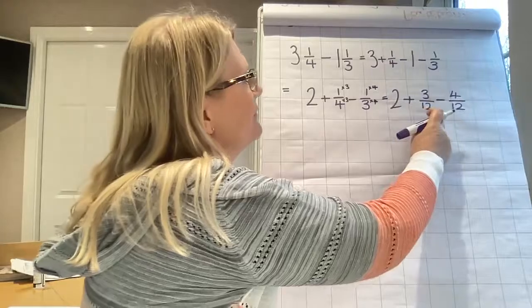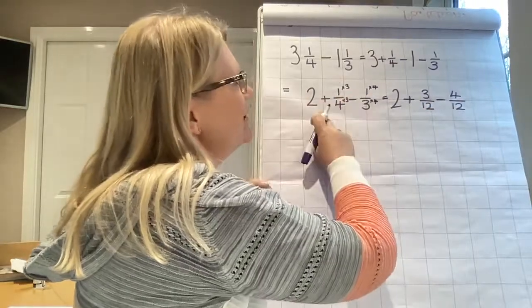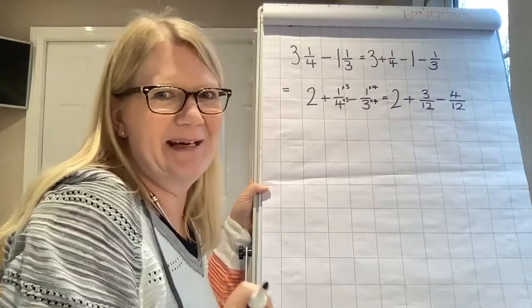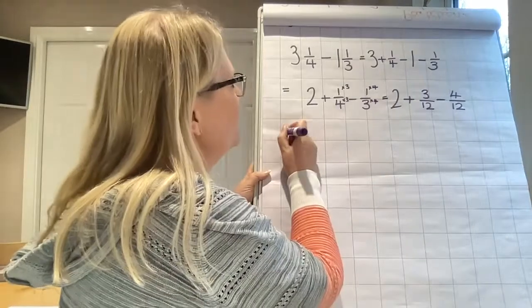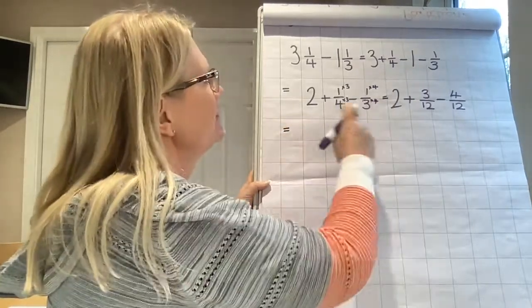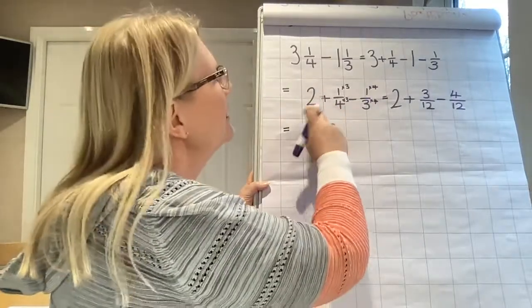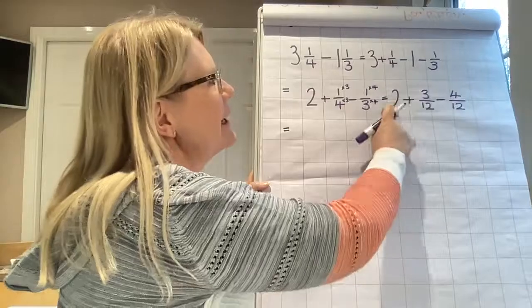So partition, regroup and find your common denominator. Now all we need to do, sorry, reordering that was, that's me confusing myself and probably you. We've reordered it, now we're going to regroup, we're going to exchange one of our integers.